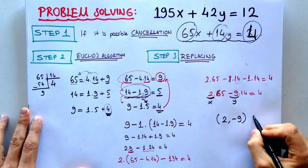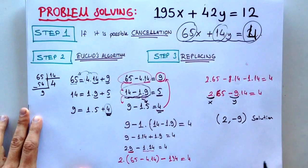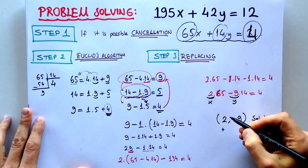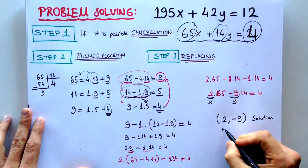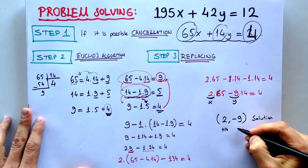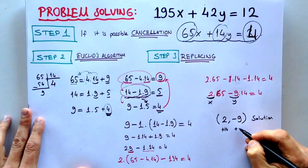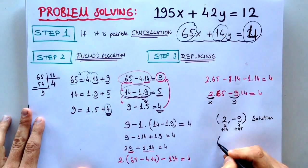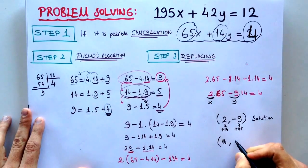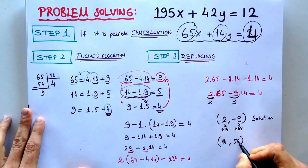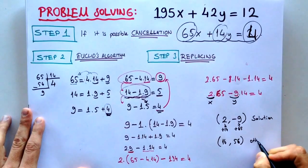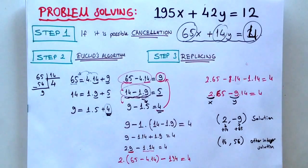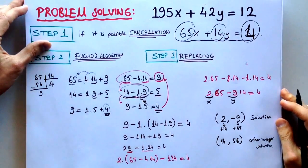This is our solution. We can reach this solution by adding the other coefficient, adding the 14 and adding the other coefficient to the y, it's 65. If we do that, we can conclude 16 and 56. It is the other integer solution. We can solve this linear Diophantine equation like this.